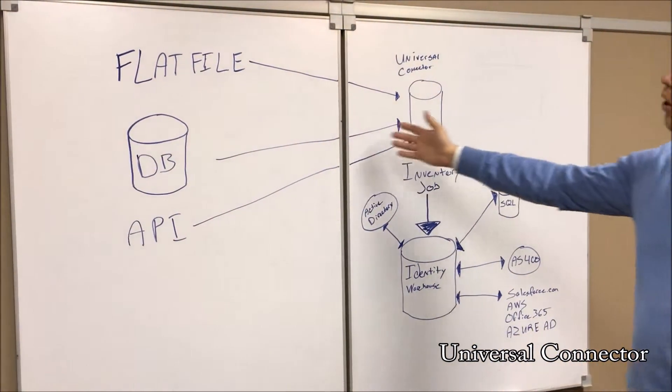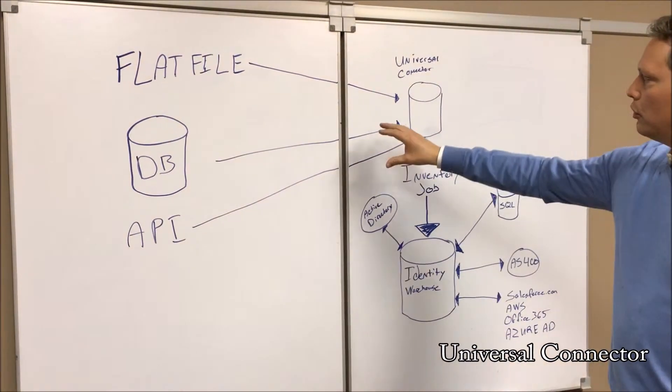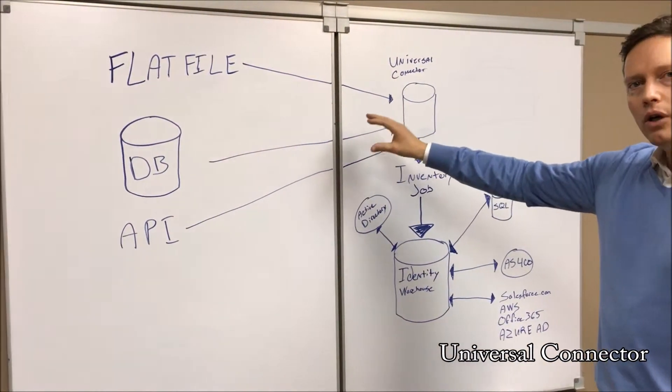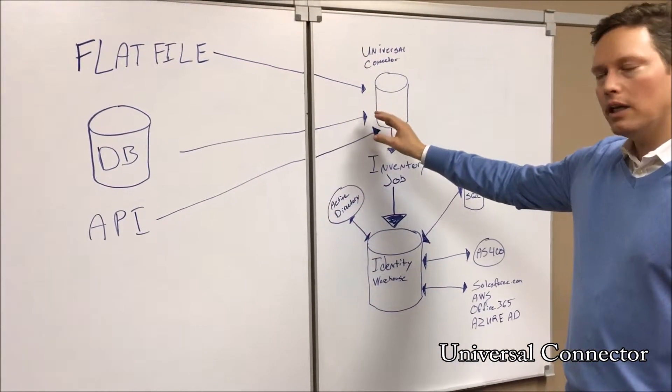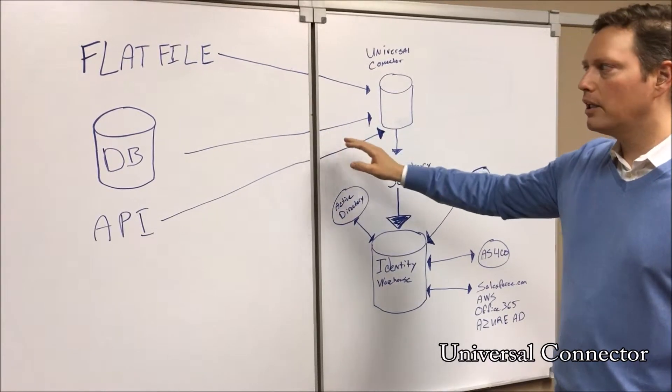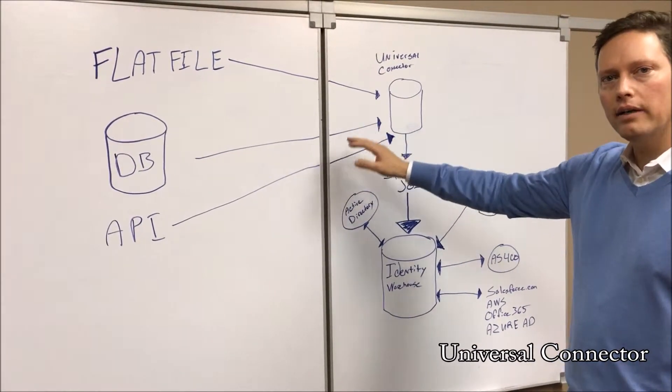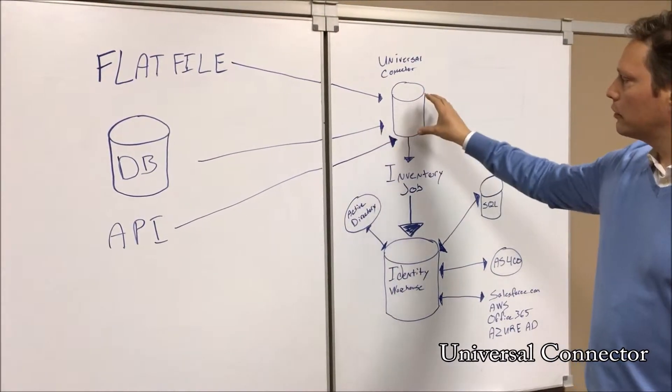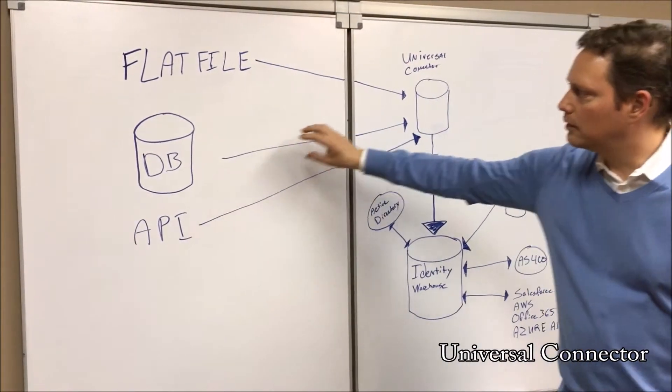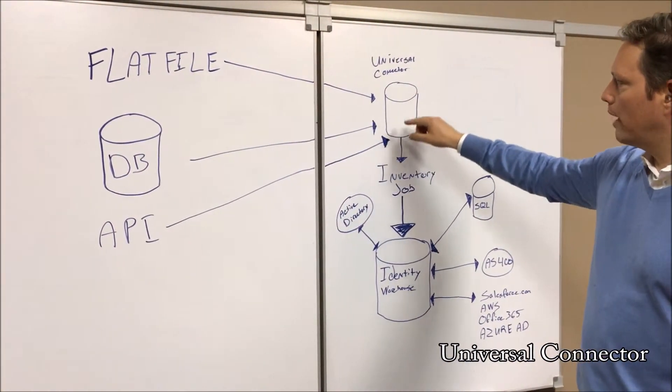Now the goal of the universal connector is for all of those systems to minimize the amount of custom code, to minimize the possibility of something breaking and something that you have to maintain on upgrades and retest. So the universal connector allows all of those systems to feed in to one common format, one common database.